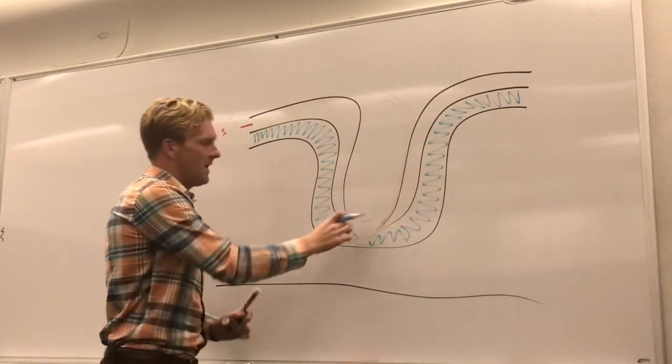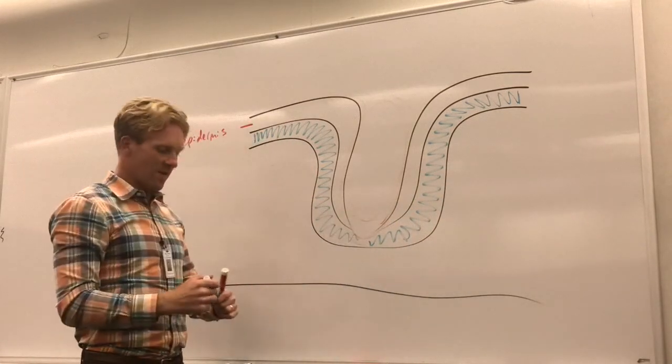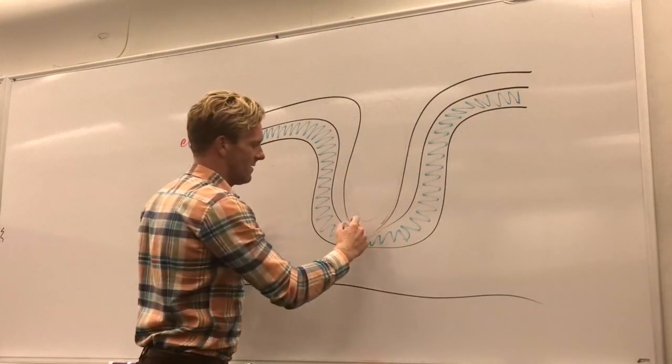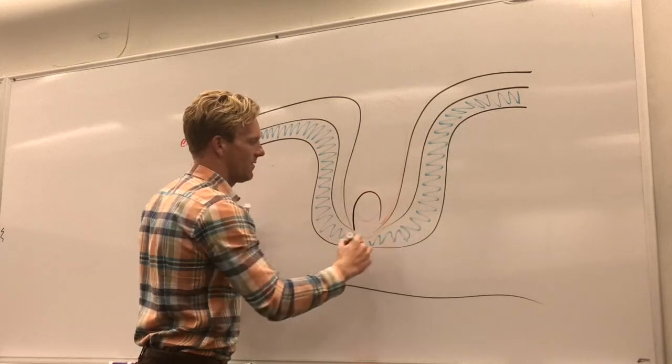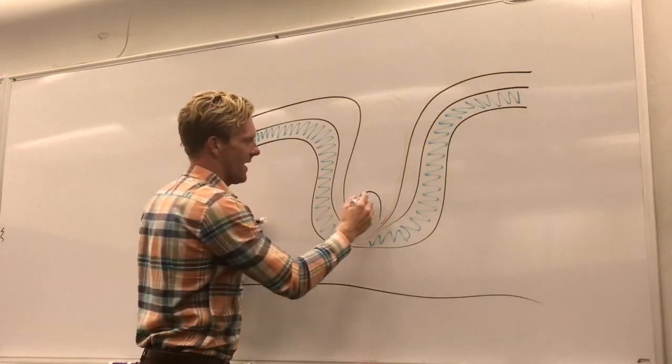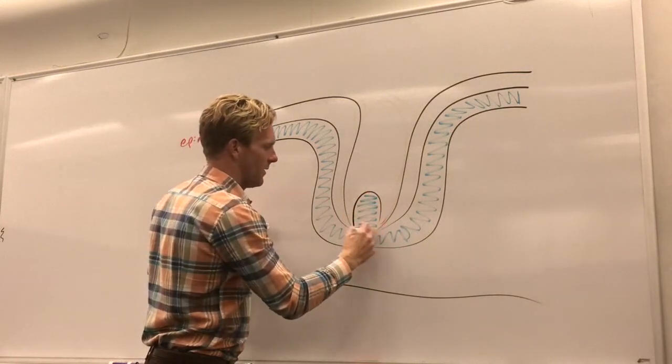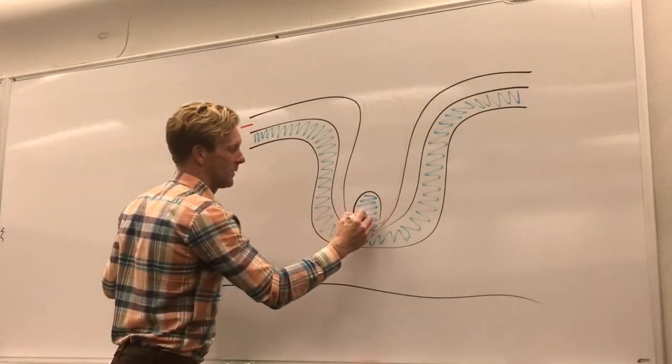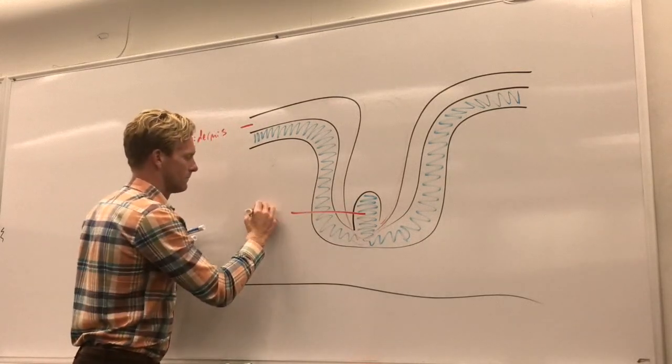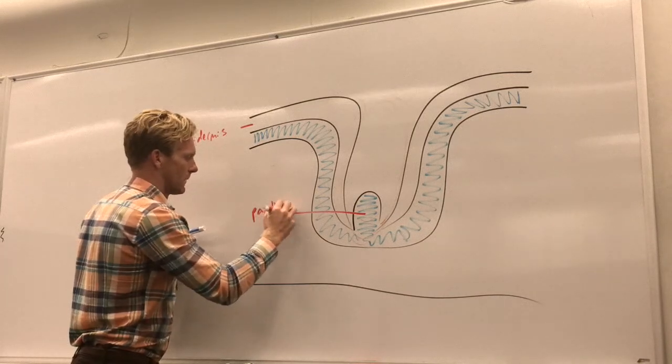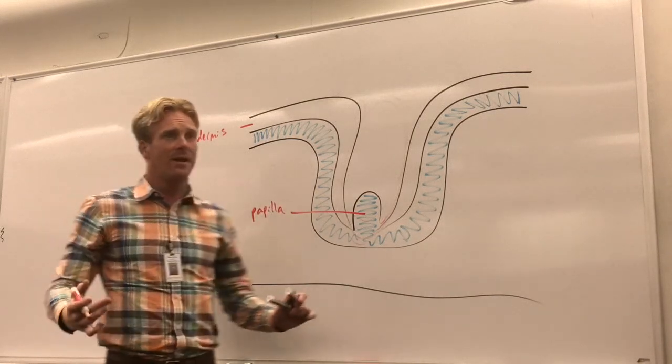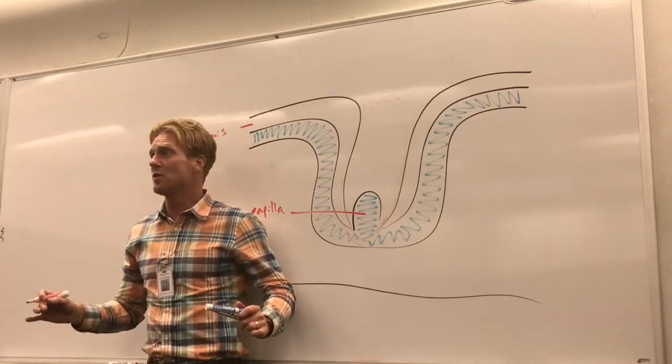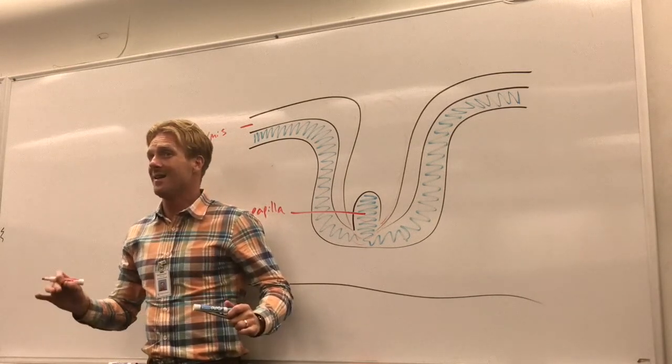So here we have the papillary layer in blue as it extends down. And when it gets to the base of this hair follicle, that papillary layer is actually going to extend upwards into the base of the hair follicle. It produces a little bulb just like that, and this little bulge has a name—it's called the hair papilla.